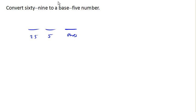So let's think about how we could make up 69 using 25s, 5s, and 1s. So how many 25s can we pull out of 69? So two 25s would be 50. Three 25s would be 75, which is too many. So we can do 2 of these 25s because 2 times 25 is 50.